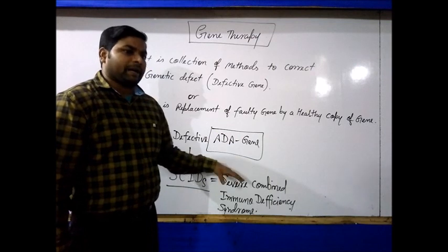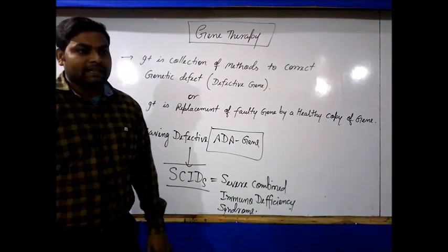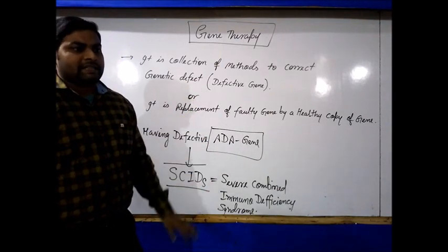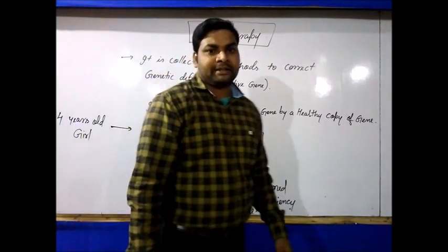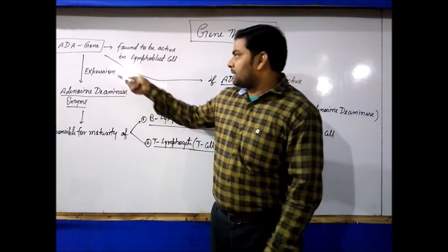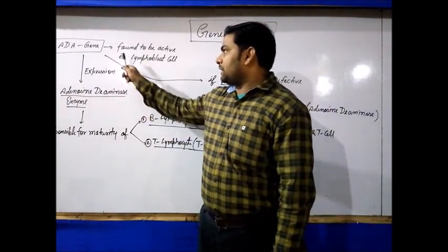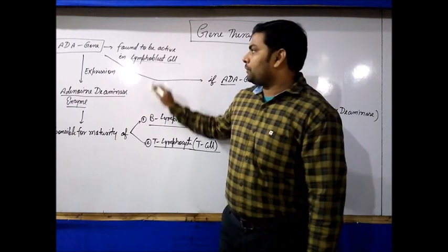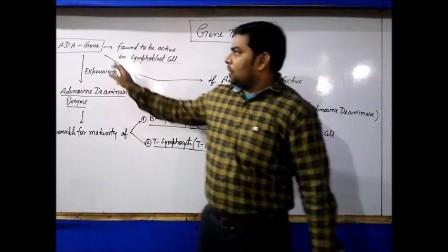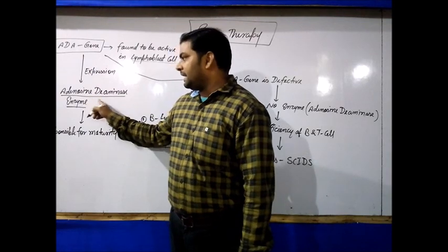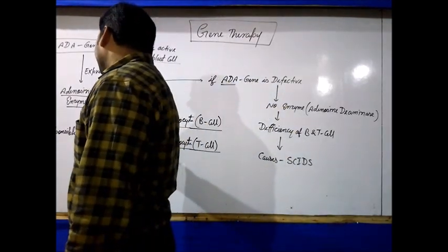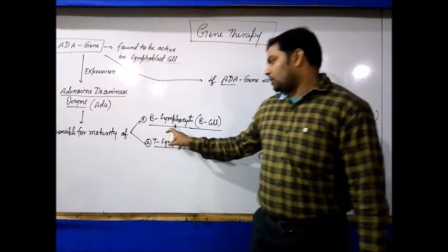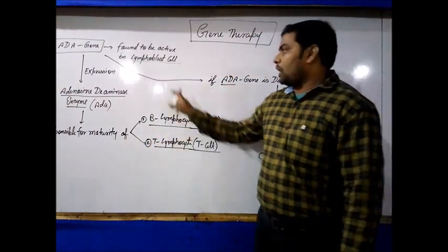Because there is severely compromised immunity, the disease is called Severe Combined Immunodeficiency Syndrome, or SCID. We need to learn how to treat this disease and how to perform gene therapy for it. The ADA gene's main function is in lymphoblast cells — it is expressed to produce adenosine deaminase enzyme, which is responsible for B and T lymphocyte maturity.